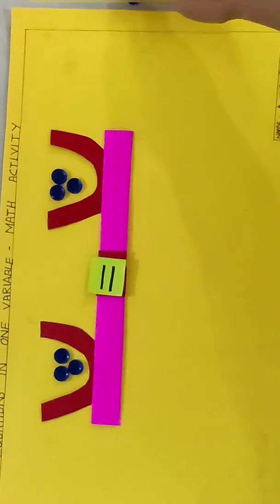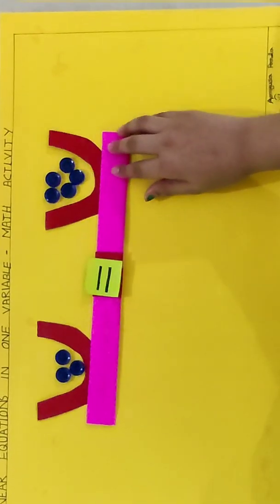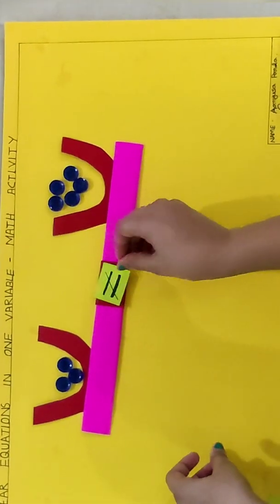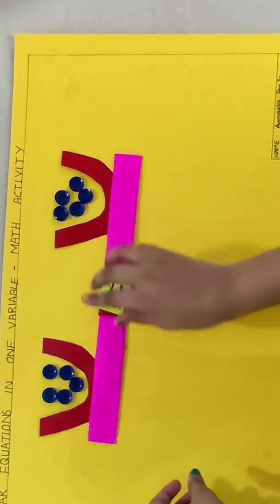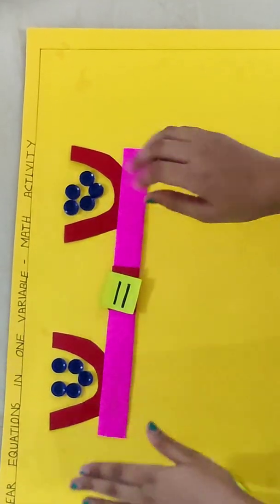So like this, if I add 2 more on one of the sides then it will become more and it will become unequal. And if I add the same number in the other side, then I will get an equal answer.